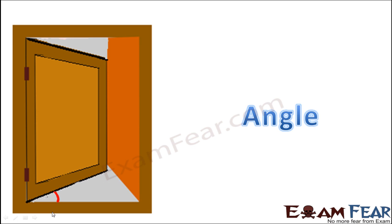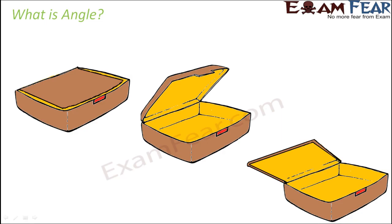So what exactly is angle? Let us now try to understand what exactly is angle. By now you would have got a fair idea that angle is about orientation of two surfaces. Whenever the orientation changes, the angle also changes.